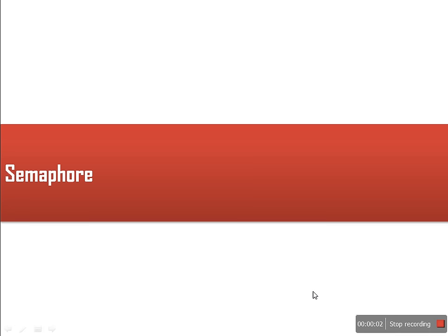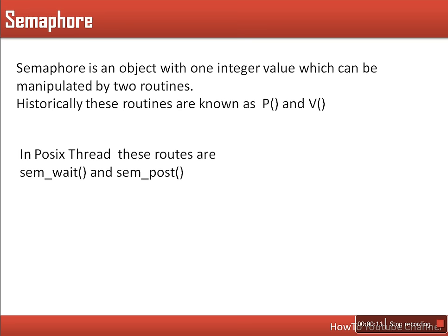Hello friends. In this video I will explain semaphore as a solution to the critical section problem. So first we will see what is a semaphore. A semaphore is an object which has an integer value, and this value can be accessed only by two operations.